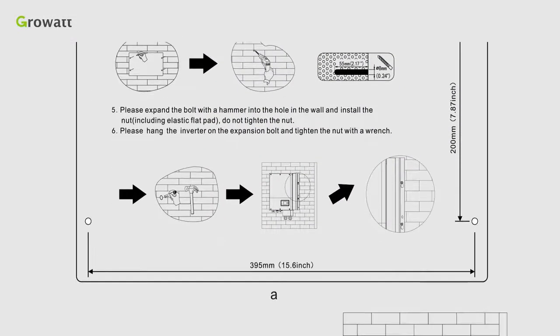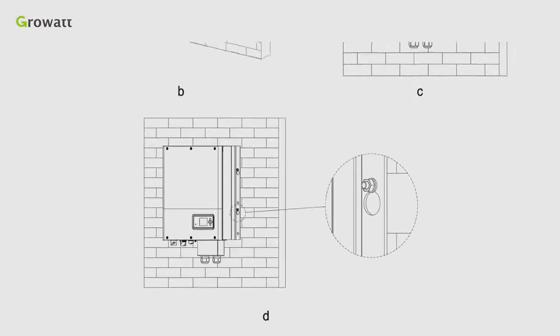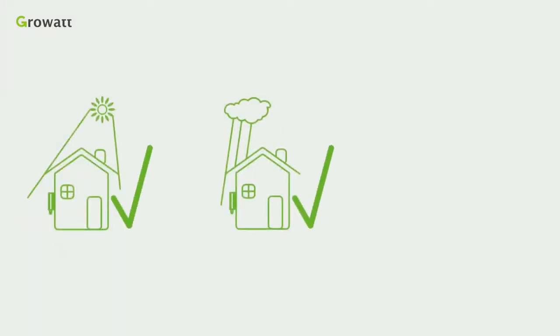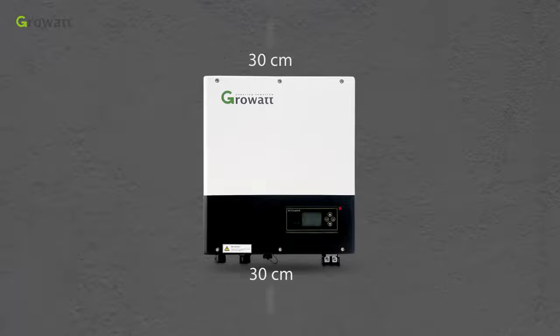Follow the location requirement on the manual to install the inverter in proper places. It is suggested to install the inverter under the shelter, avoiding the direct sunlight and rain. The wall should be stable. Airtight cabinet is prohibited.